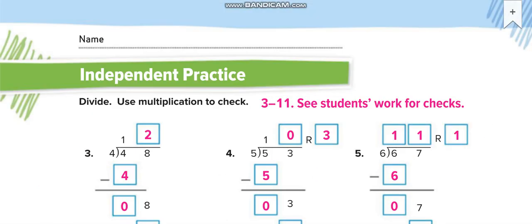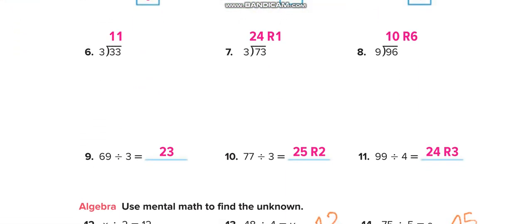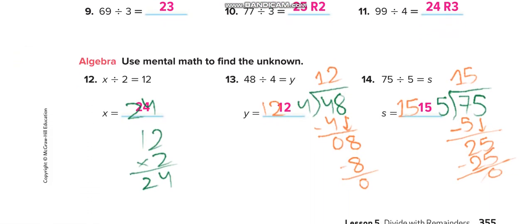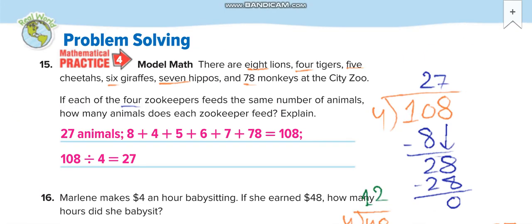Next page, the independent practice, guys. You have to do all these questions by yourself and then match your answers from this video. Here it is. This is how you have to divide. For this question, you have to multiply because they already gave you the answer. So to get the dividend, you have to multiply the quotient with the divisor. There are 8 lions, 4 tigers, 5 cheetahs, 6 giraffes, 7 hippos, and 78 monkeys at the city zoo. When you add all of them, it's equal to 108. If each of 4 zookeepers feeds the same number of animals, how many animals does each zookeeper feed? Explain. So you divide by 4 because there are 4 zookeepers, which is equal to 27. So each zookeeper will feed 27 animals.